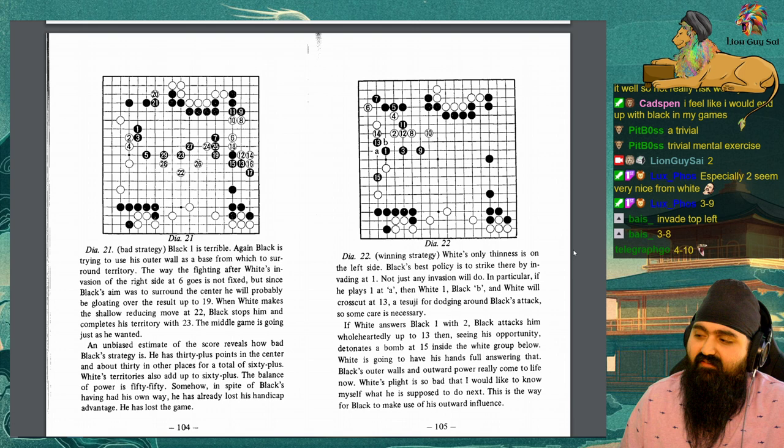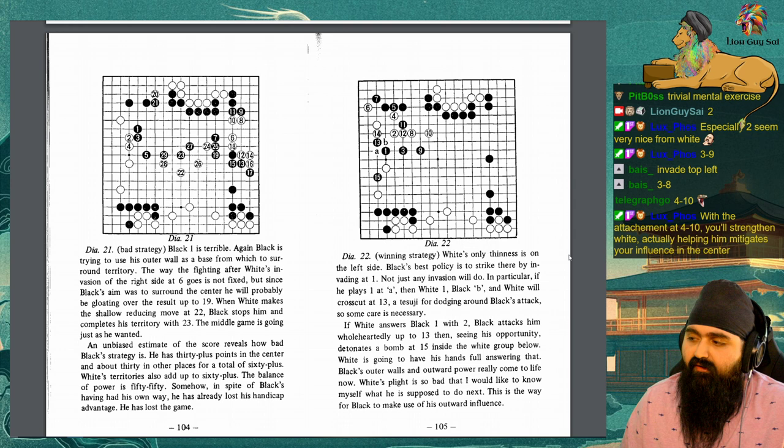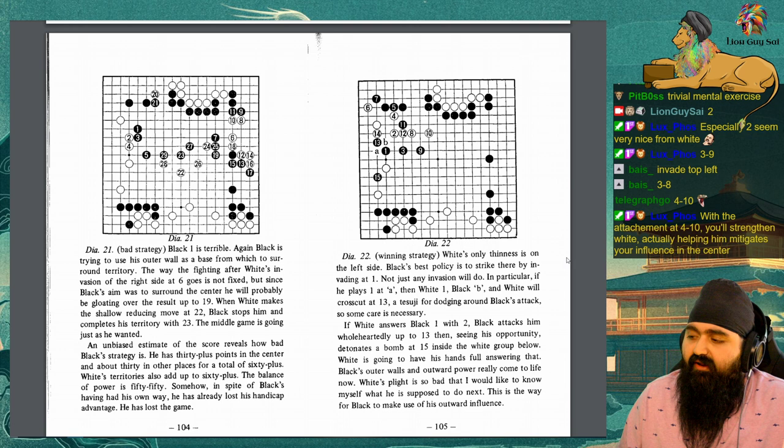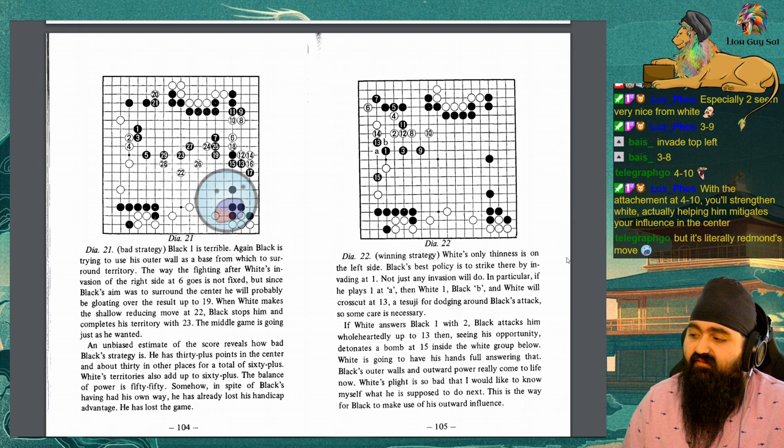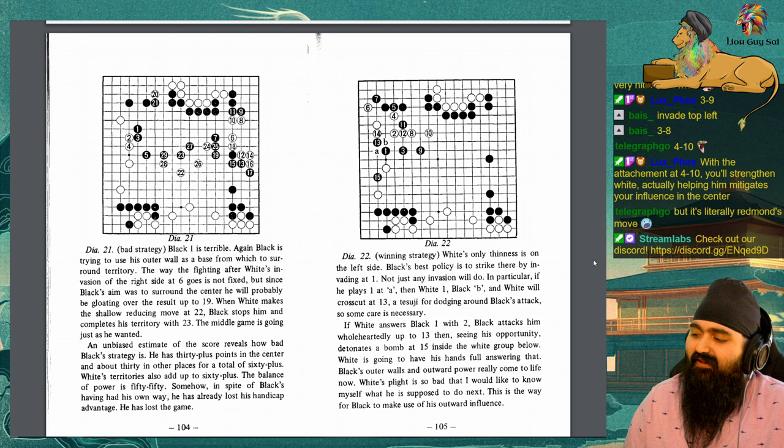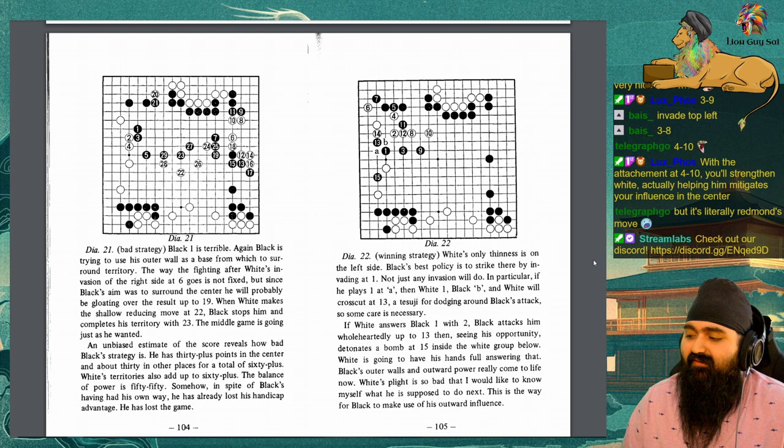Diagram 22. Winning strategy. White's only thinness is on the left side. Black's best policy is to strike there by invading at 1. Not just any invasion will do. In particular, if he plays 1 at A, then white 1, black B, and white will crosscut at 13, a tesuji for dodging around black's attacks, so some care is necessary. If white answers black 1 with 2, black attacks him wholeheartedly up to 13. Seeing his opportunity, detonates a bomb at 15 inside the white group below. White is going to have his hands full answering that. Black's outer walls and outward power really come to life now. White's plight is so bad that I would like to know myself what he is supposed to do next. This is the way for black to make use of his outward influence.